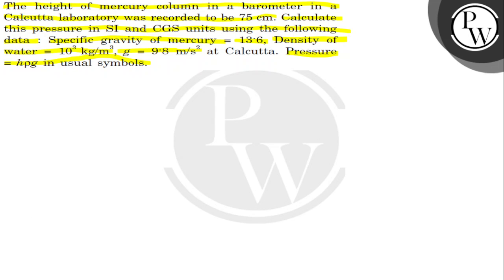First of all, what is given? Height of the column is equal to 75 cm which is equal to 75 into 10 to the power minus 2 meter.